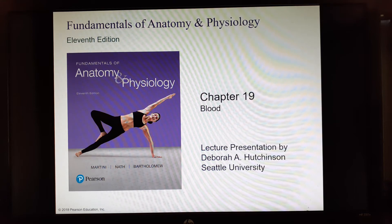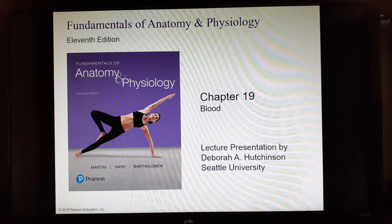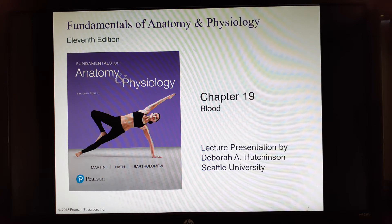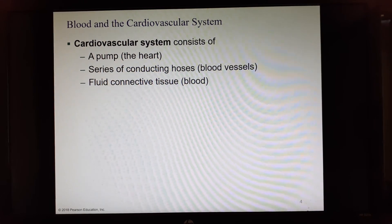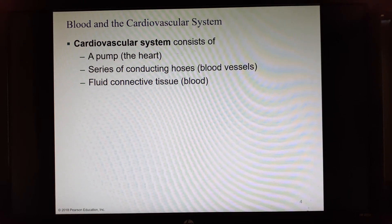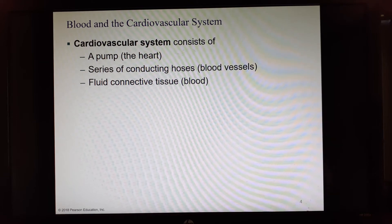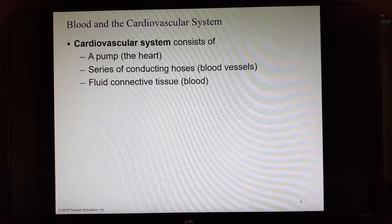We're going to begin Chapter 19, which is all about blood. For lab, blood is in the second practical. Endocrine and blood are split in the practicals, but in the units they're together — Chapters 18 and 19 make a lecture unit. We took blood and put it with the endocrine system, and then we'll put the heart and vessels together in a second lecture unit. They're all part of the cardiovascular system.